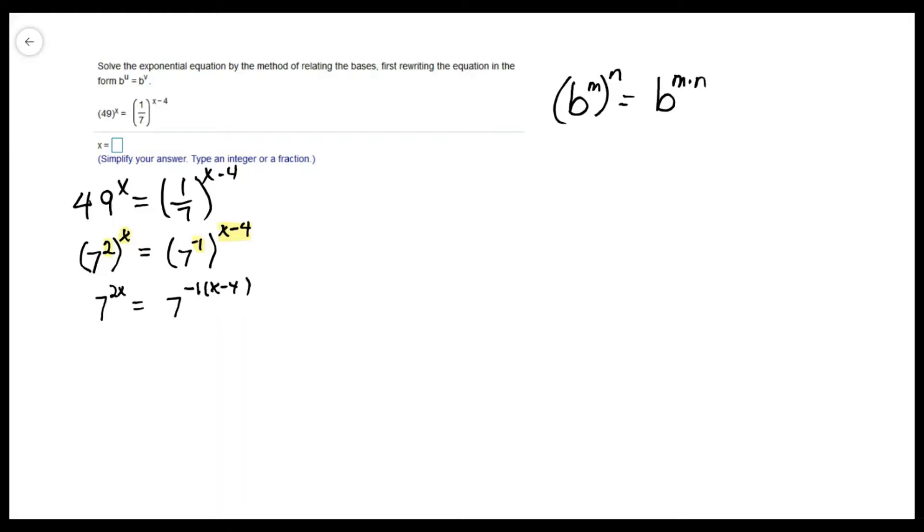So now I've written both sides of the equation with the same base. I'm able to use that property called relating the bases to say that this exponent on the left is equal to the exponent on the right. So this gives me a new equation to solve.